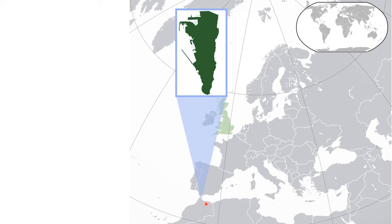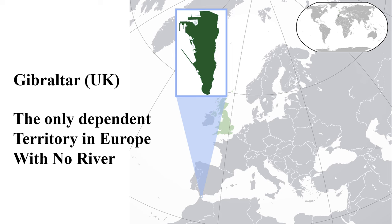In Europe, there is only one dependent territory without rivers: Gibraltar, an overseas territory of the United Kingdom located near the Mediterranean Sea in the region of Spain. This dependent territory has no permanent rivers and is the only dependent territory in Europe without rivers.